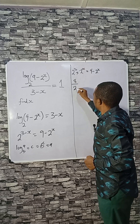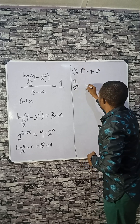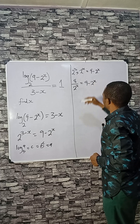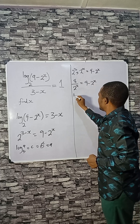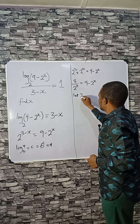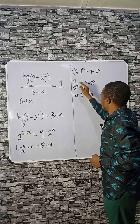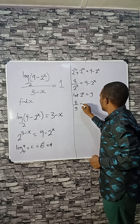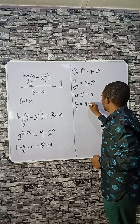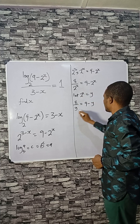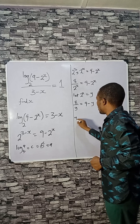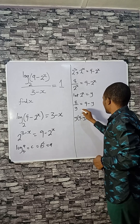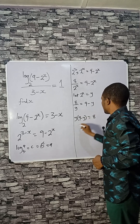So if we let 2 raised to power x equal to y, we have 8 divided by y equals 9 minus y. From here, multiplying through, we get y times 9 minus y equals 8.